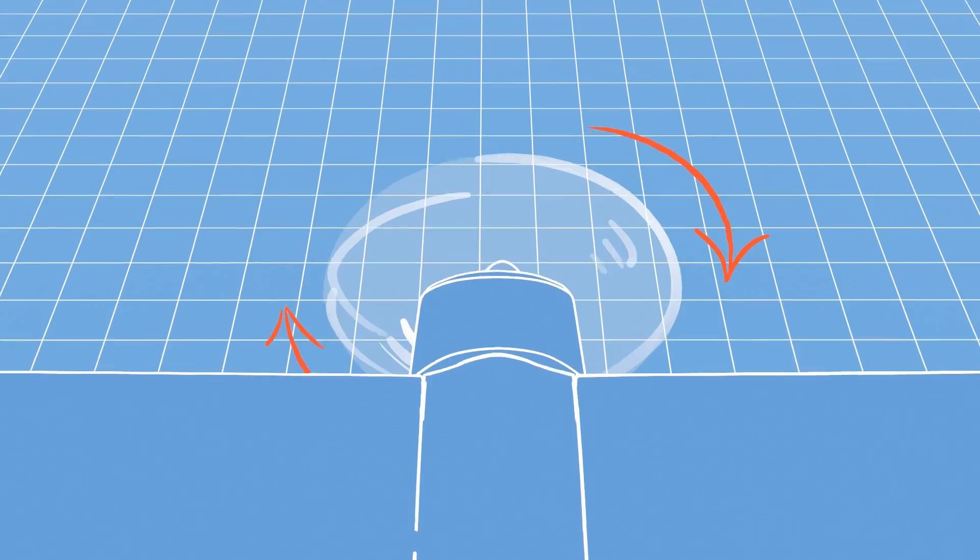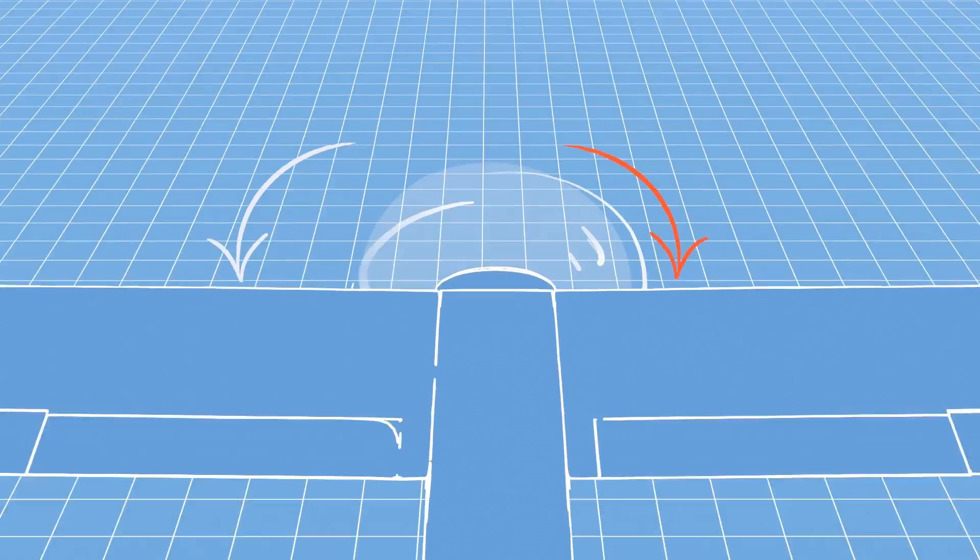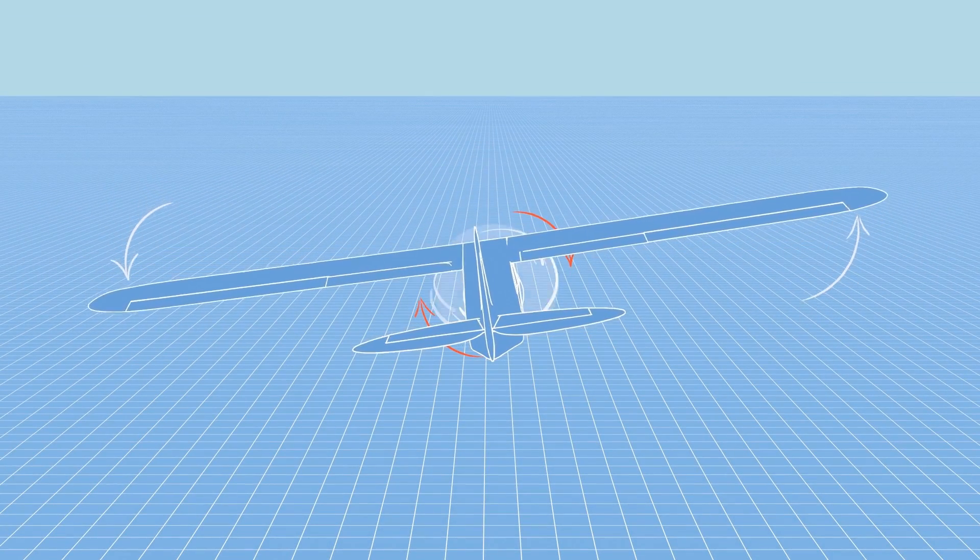The propeller also pushes against the air and the air pushes back. This creates torque to the left, called the torque factor.